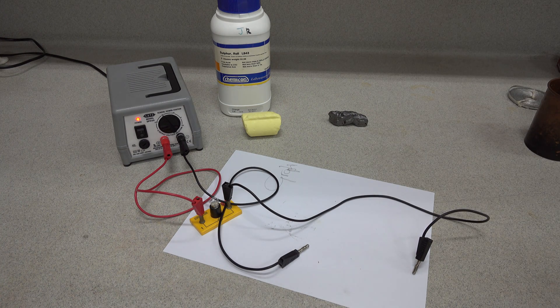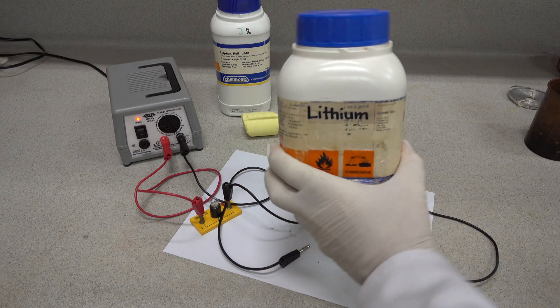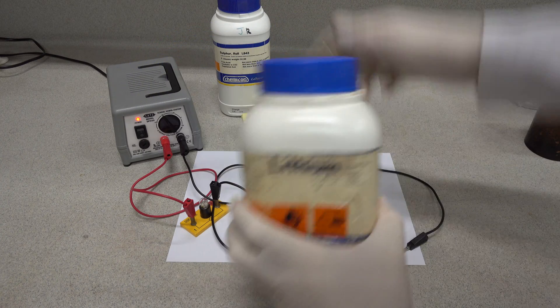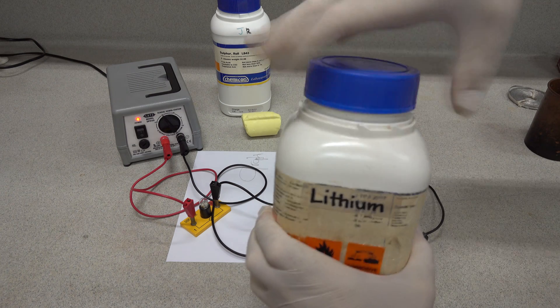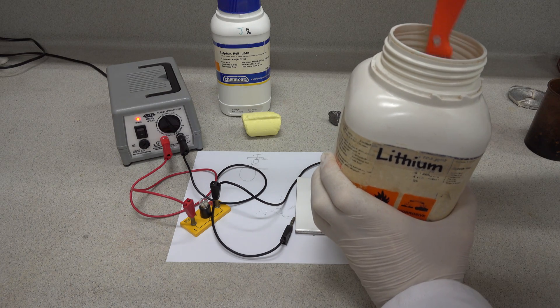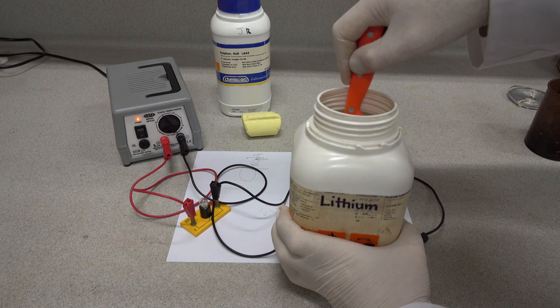Next, we have a rather interesting element. This one is a group one metal. This one is lithium metal. And it's very reactive. It's stored under oil. And we need to take it out of the container in the oil and have a look to see if it conducts electricity. So let's get the lithium out.